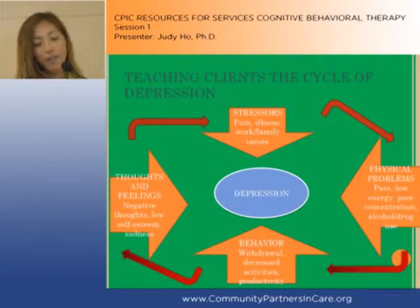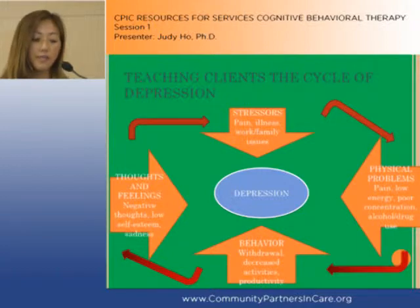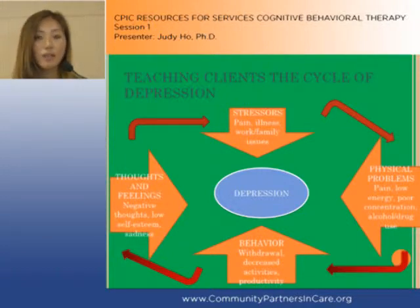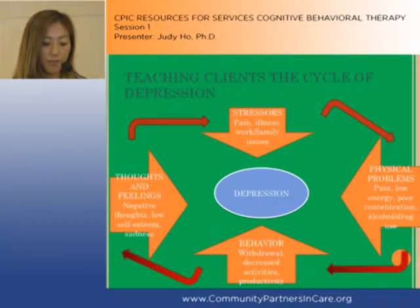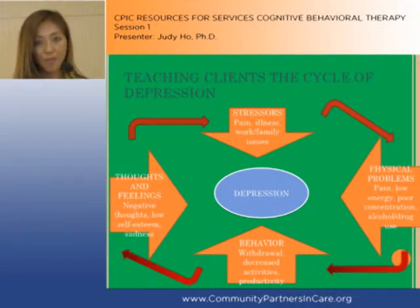On the very left side you have the arrow that says thoughts and feelings — these are negative thoughts, low self-esteem, and sadness. This relates directly to the thoughts part of the cognitive behavioral model. On the bottom arrow you have behavior, again another important component of the cognitive behavioral model.